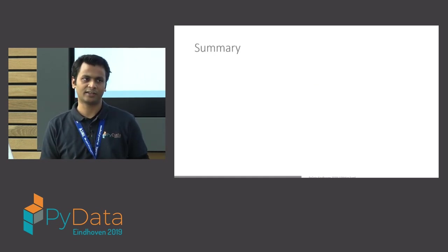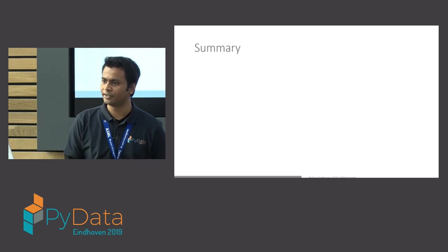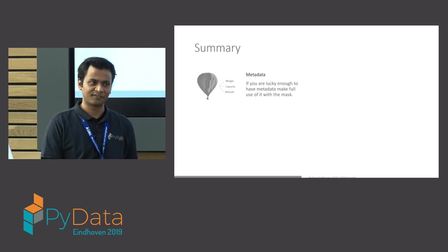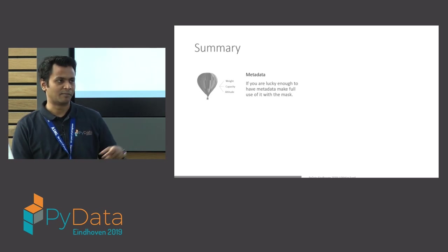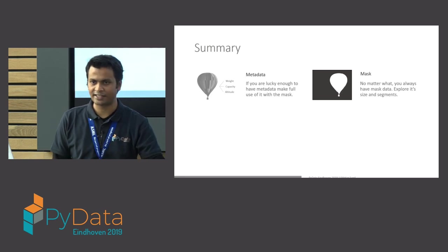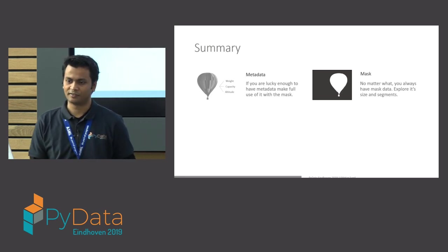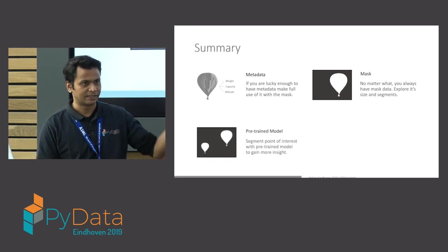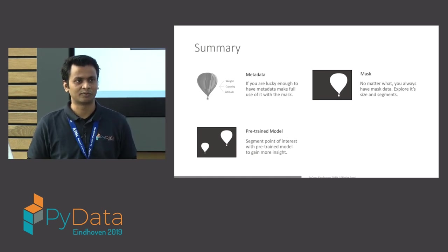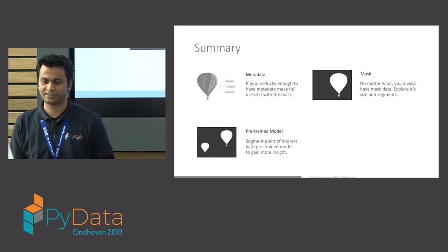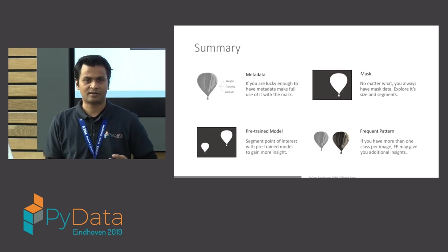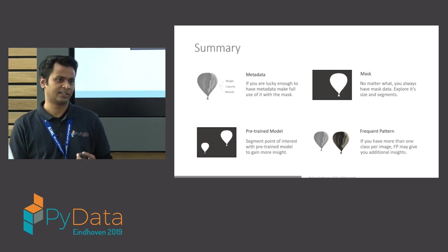We are at the end of the talk. To summarize: if you are lucky enough to have metadata, use it — and you can combine it with the mask to generate even more plots. If you don't have metadata, you always have your mask, so use it to calculate the area and see how many segments you have. If you have a pre-trained model to do additional segmentation on a point of interest, that may help, but not always — all models are a little bit biased, so for your image set the pre-trained model may not work so well. Finally, if you have balanced classes and multiple classes, you can use frequent pattern mining to produce additional insight.